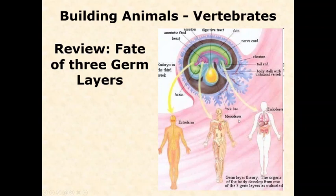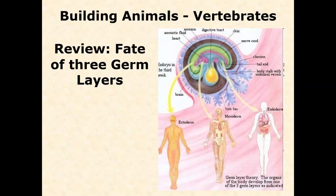Mesoderm gives rise to muscles, skeleton, and a couple of organs including reproductive structures like ovaries or testes, kidneys, and heart. Primarily, if you remember mesoderm as bones, muscles, and connective tissue, that's a good general guideline. Endoderm is most of your major internal organs — your lungs, liver, stomach, most of your digestive tract, and accessory organs. These three layers are set up very early on in the developing embryo and apply to all bilaterians, sometimes called triploblasts.